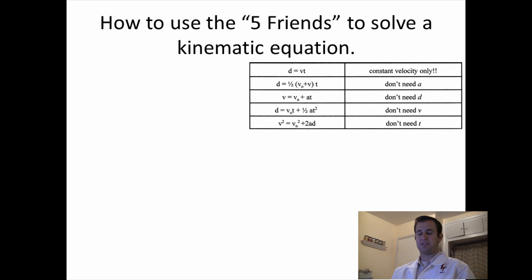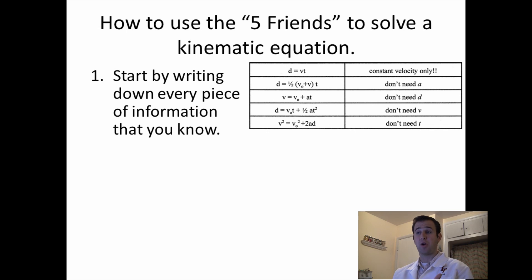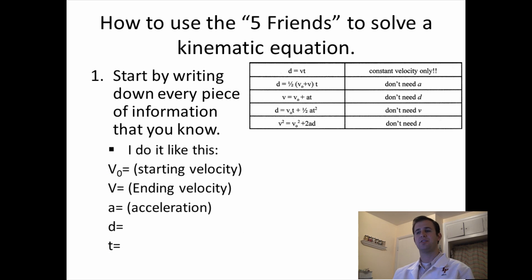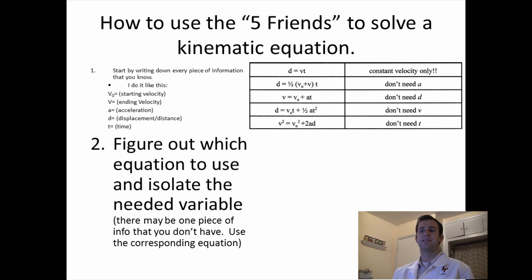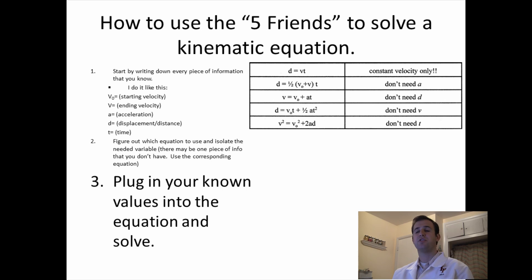I think the easiest way to use them is to break it down into three simple steps. The first step is to start by writing down every piece of information that you know. The way that I like to do that is to actually write it in a vertical column, where I start off with v0, v, a, d, t, which is our starting velocity, ending velocity, acceleration, distance or displacement, and time. The next thing that we'll do is, once we've written down what we know and realized what we don't know, we'll figure out which equation to use and isolate the needed variable. There's usually one piece of information that we don't have, so we'll use that corresponding equation. And then last, we just plug in your known values into the equation that you've chosen and solve.